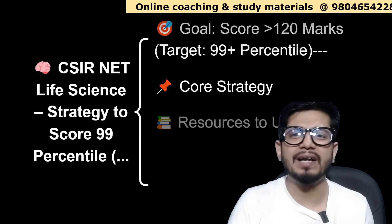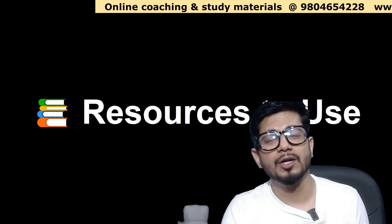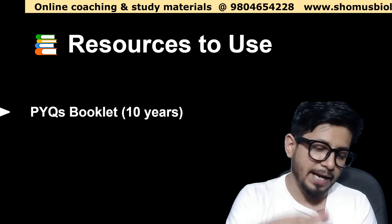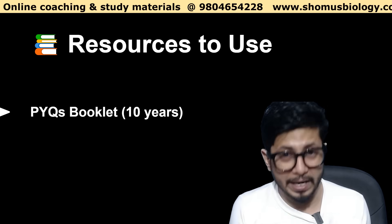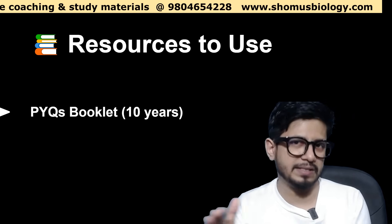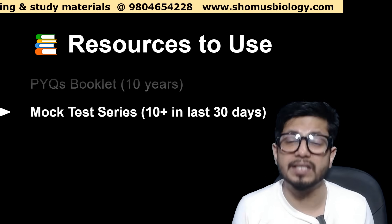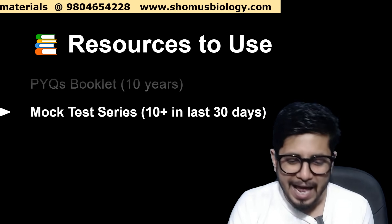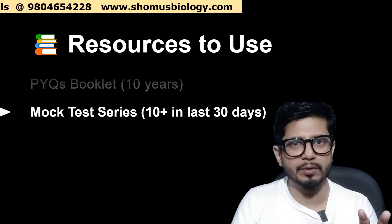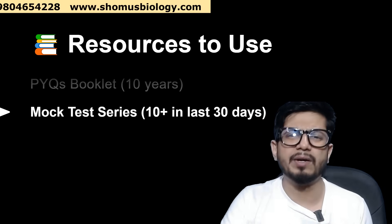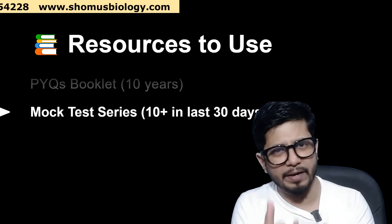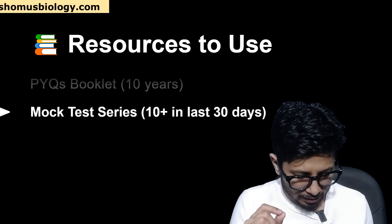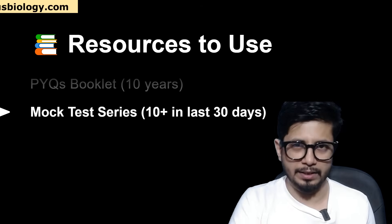Next are the resources to use for preparation to get the 99th percentile. First is the PYQ booklet — last 10 years of CSIR NET question papers with previous year questions and answer explanations. If they are unit-wise segregated, that's better, because you prepare unit by unit. You need unit-wise segregated questions and should practice them accordingly. Also, attempt 10 or more mock tests in the last 30 days of your preparation, covering individual units first and then all units together. At least 2 full-syllabus mock tests are sufficient in the final month.